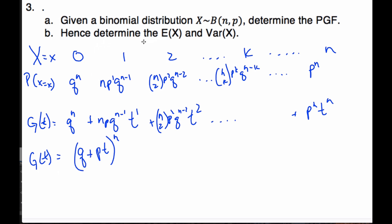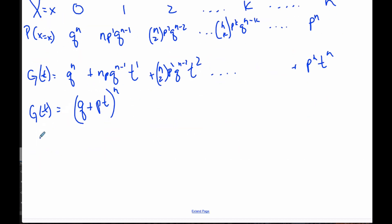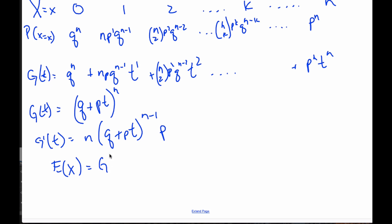The question says hence determine the expected value and the variance. Looking back at our formula booklet, the expected value is the derivative of the generating function evaluated at one. So g prime of t equals n times (q + pt) to the n minus one, and by the chain rule we multiply by p. To find E[X], plug in t = 1: we get n times (q + p) to the n minus one times p. Since q = 1 − p, we have q + p = 1, so this simplifies to np.